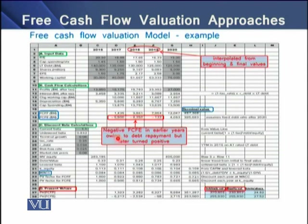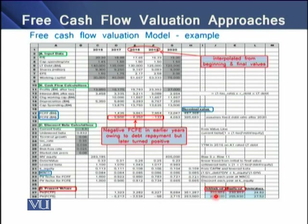An important observation is that we have negative free cash flow to equity holders in the earlier years, becoming positive in the final year. The negative cash flows are due to debt repayments. We then arrive at the intrinsic values of the firm and the intrinsic value of equity for the equity holders, and dividing these values by the number of shares gives us the intrinsic values per share.